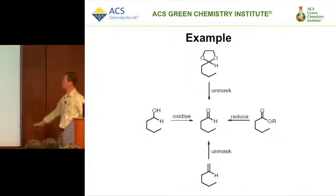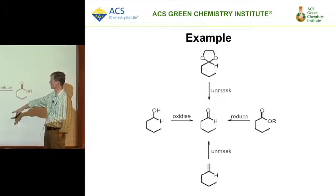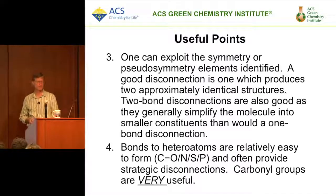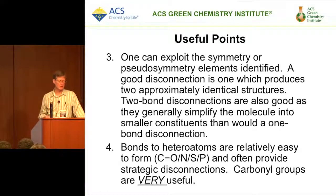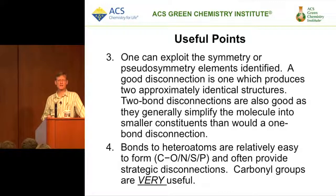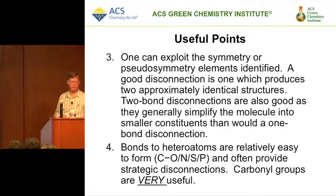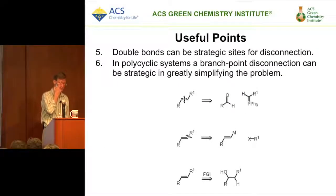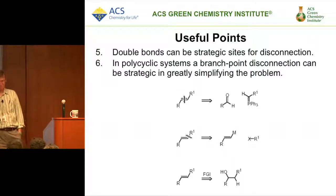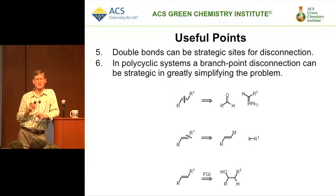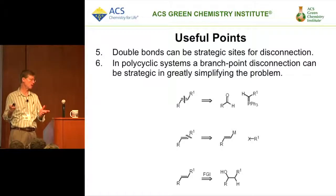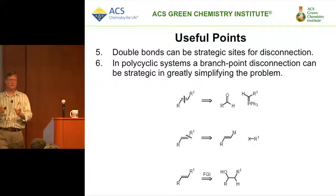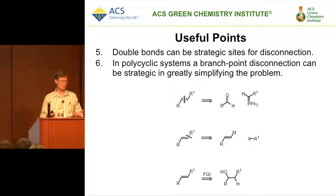There are lots of different ways to get to your target — you can oxidize, unmask, or reduce. Not all routes will be equally good. Symmetry and pseudo-symmetry are extremely important, as are multiple bond disconnections. Bonds to heteroatoms form easily, and carbonyl groups are very useful in synthetic schemes. Regarding double bonds: many natural products are not as heavily conjugated as petroleum-derived molecules, which are in a highly reduced state. It's synthetically easier to exploit double or triple bonds.